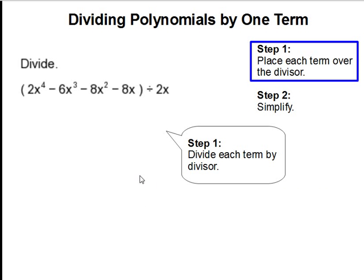Step one, divide each term by the divisor. So for each term that we have here I'm going to divide it by our divisor of 2x.